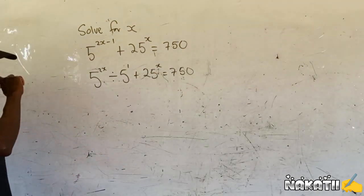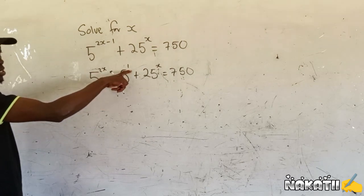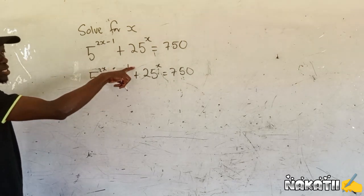Because using laws of indices, when the bases are the same, we subtract the powers. That's why we had 2x minus 1 here.